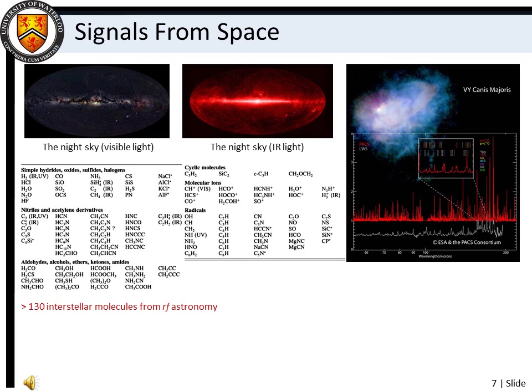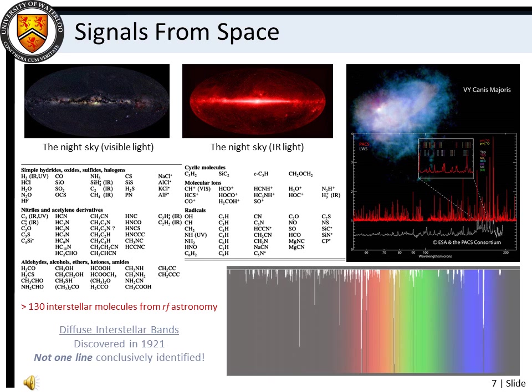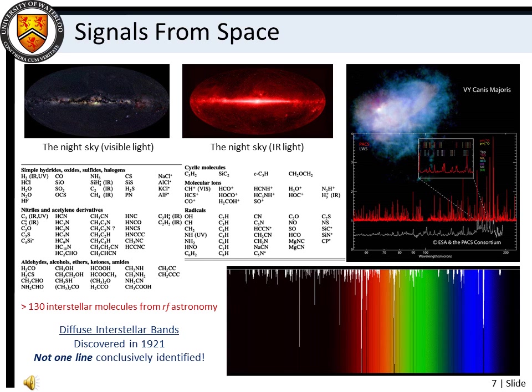Interestingly, we also find that numerous frequencies of light are absorbed as they pass through interstellar space, and despite the fact that these diffuse interstellar bands were first observed in 1921, to this day we have not conclusively assigned one single line to a known chemical absorption. The identities of the atoms or molecules responsible for the diffuse interstellar bands is considered one of the biggest open questions in science.